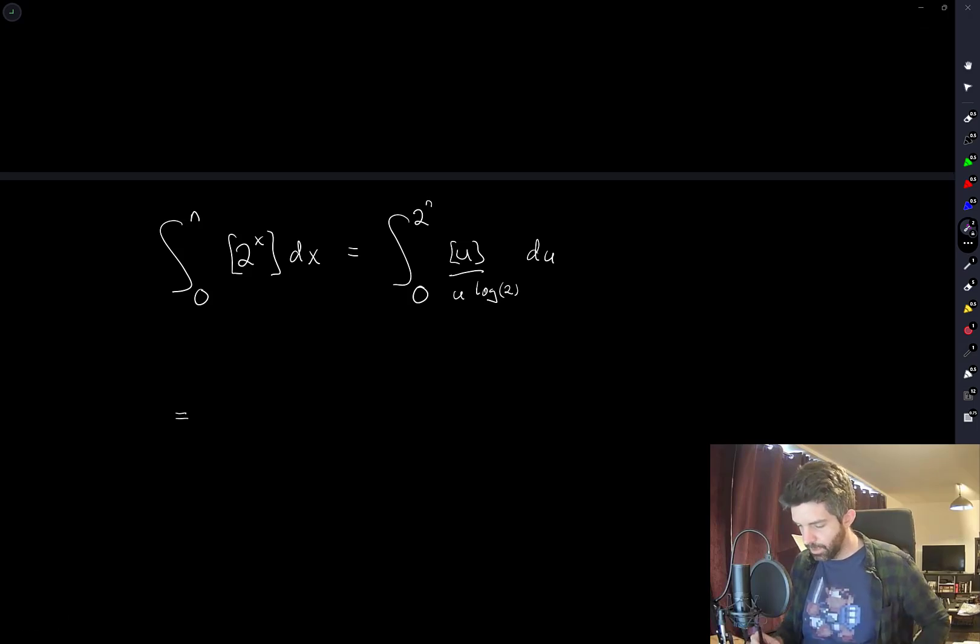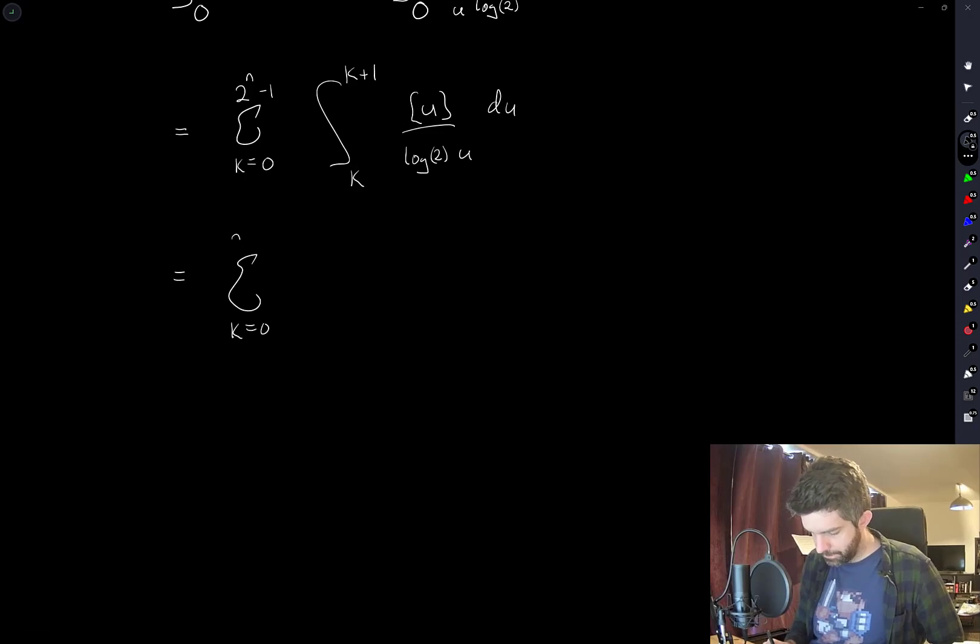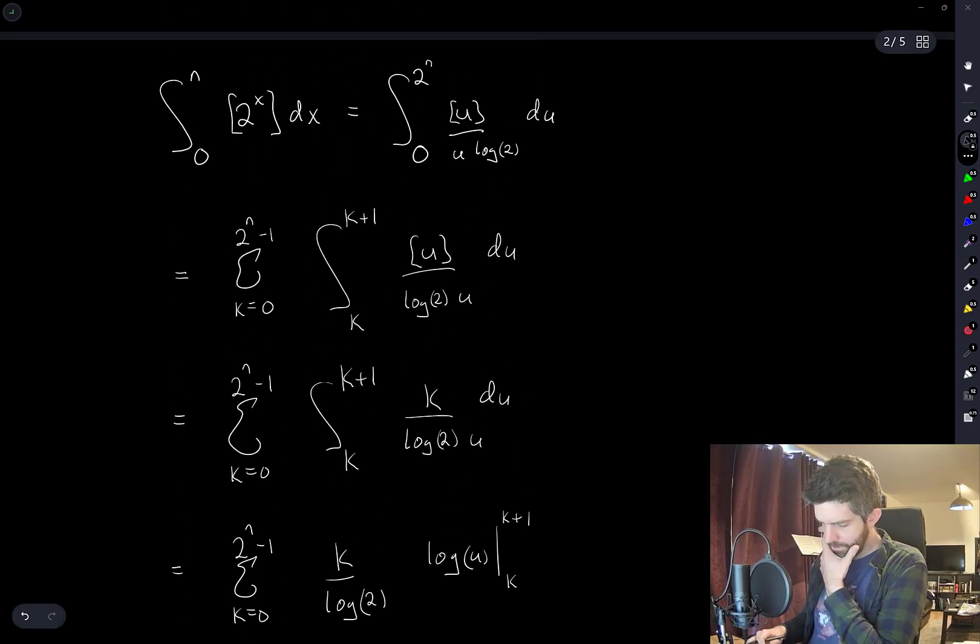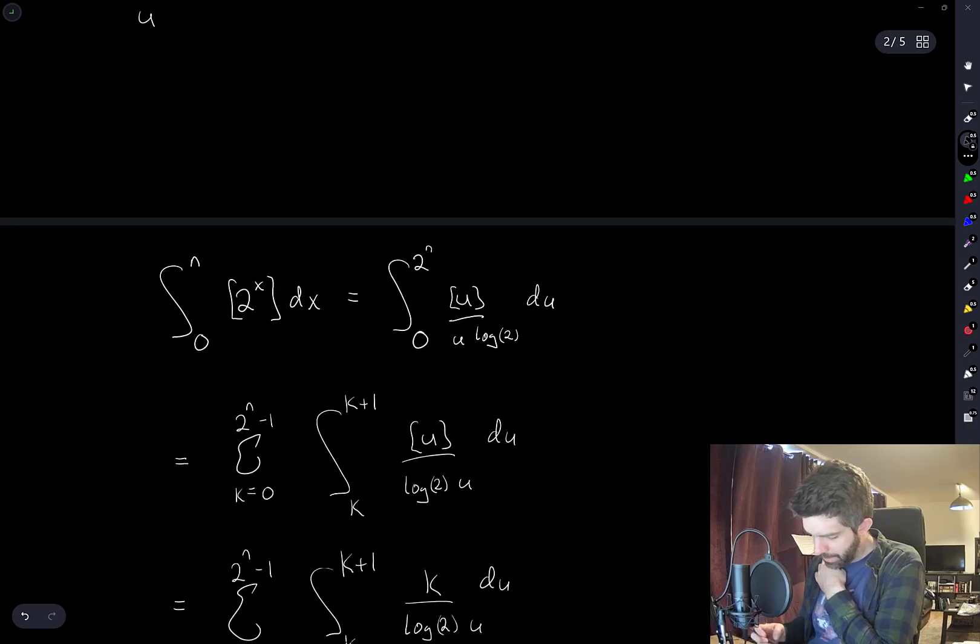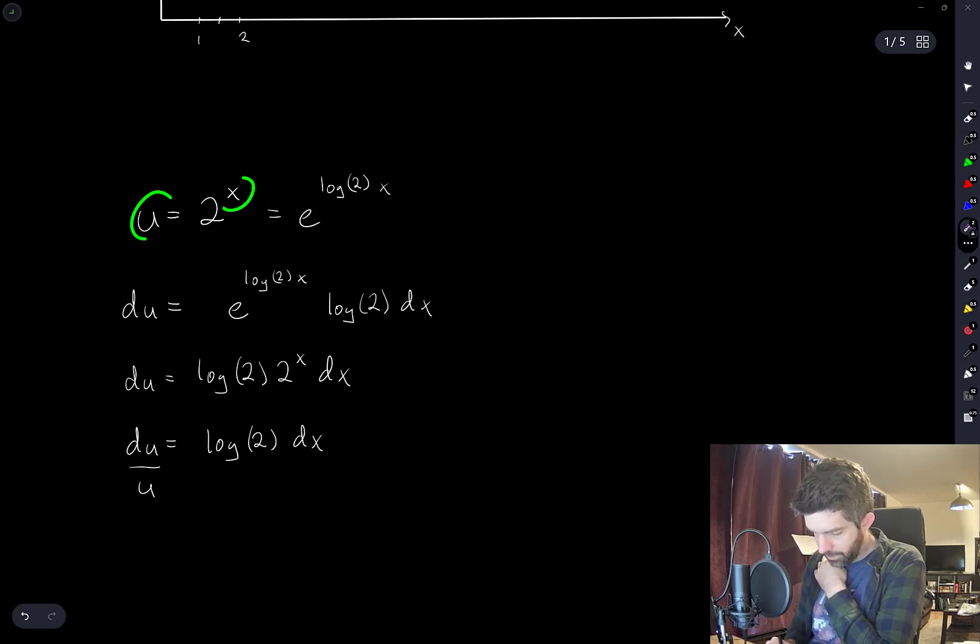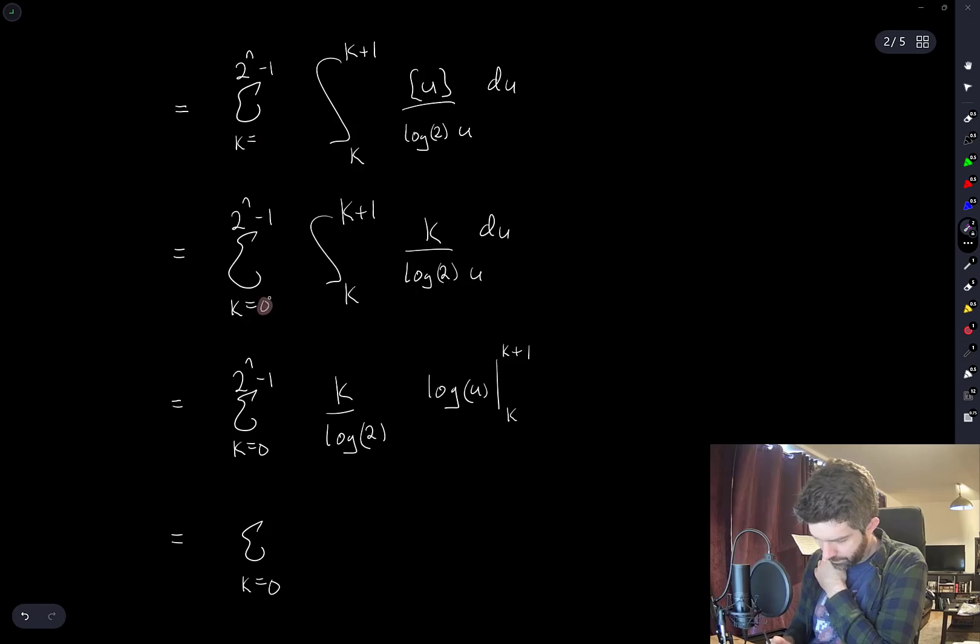Integers from 0 to 1, 1 to 2, all the way up to 2 to the n. Then this is going to be a constant on each of those, and we'll just be integrating something that looks like 1 over u. I have a small problem here. This lower bound should actually be 1 because when x is equal to 0, u is equal to 1. So that changes the lower bound on all of these sums.